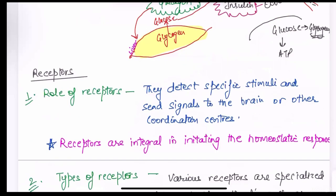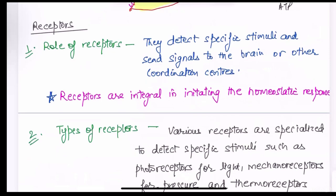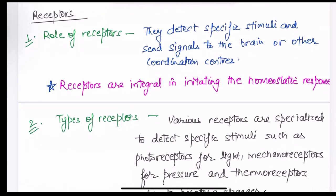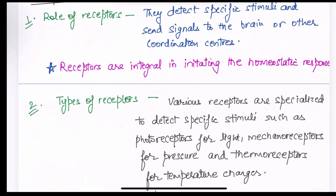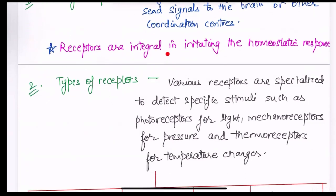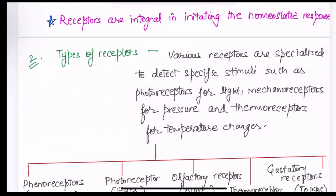Receptors. So, receptors are very important because if the receptor is present for a particular stimuli, only then that stimuli will be able to send signals inside. The role of receptor is to detect specific stimuli and send signals to the brain or other coordination centers. So, the receptors are very integral. They are a central part in initiating the homeostatic response.